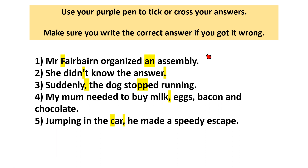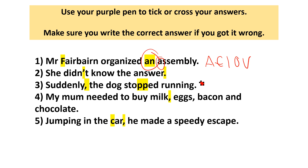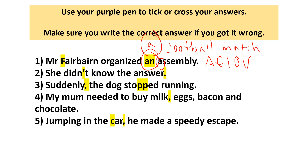And 'an assembly' - this is really important. If you want to say 'a something' and the word after begins with a vowel - so an A, E, I, O or U - you need to use 'an' before it. If it begins with a consonant, so any of the other letters, it needs to be 'a'. So if it said 'Mr Fairbairn organised a football match', it would be 'a' instead of 'an'. So 'an' is for words that begin with vowels, and 'a' is for words that begin with consonants.